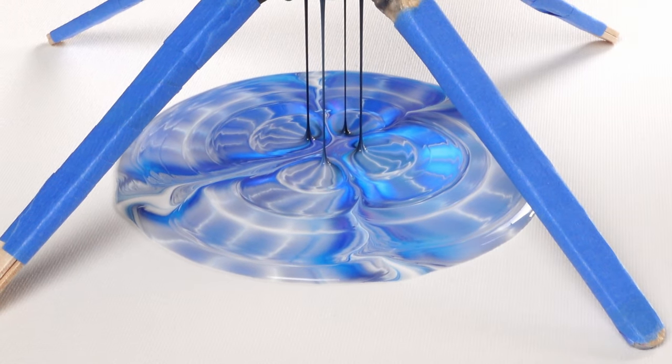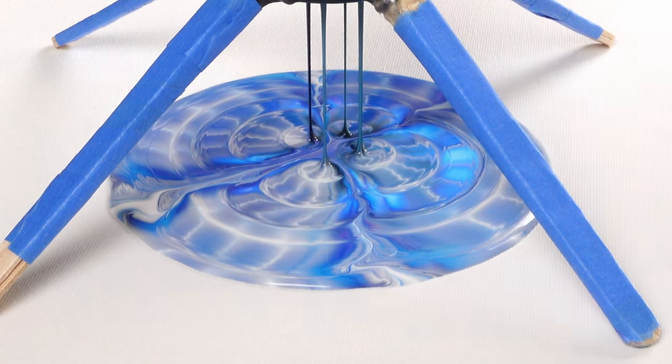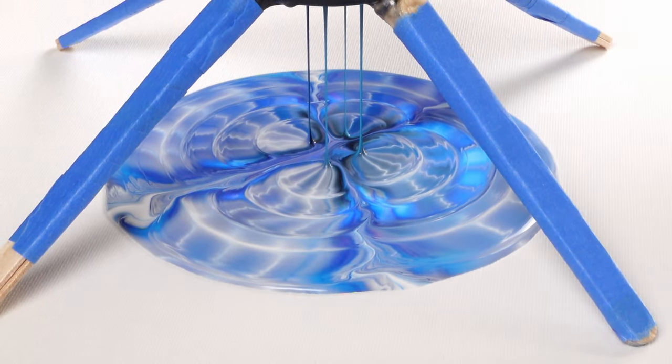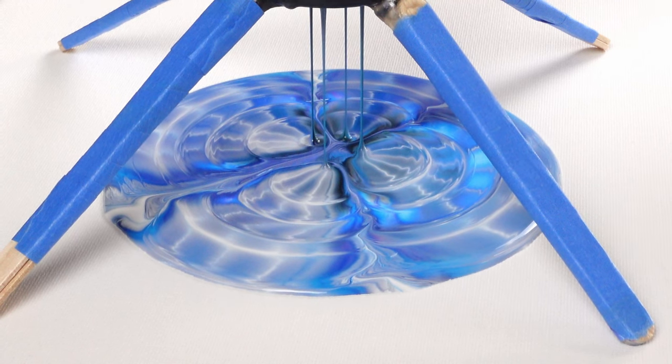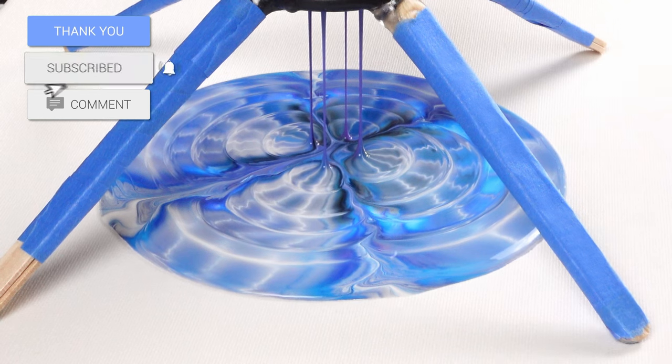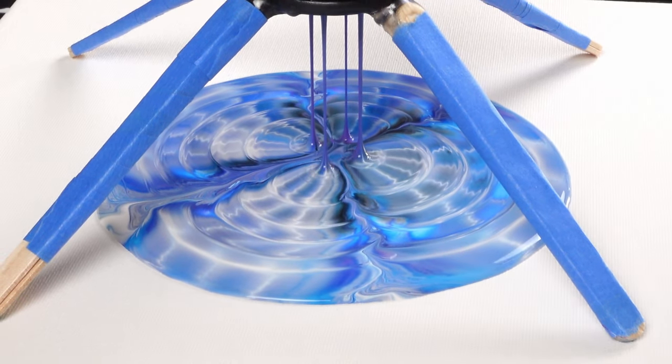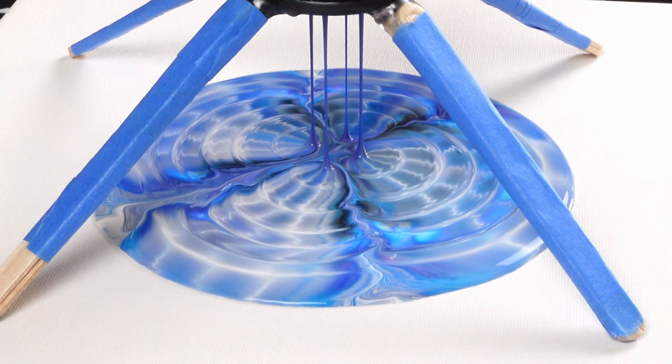So it almost looks like it's just creating four streams on its own. I guess the lines must be so close together that it's having a hard time distinguishing the difference between all the different streams, so everything's flowing out in four different streams.